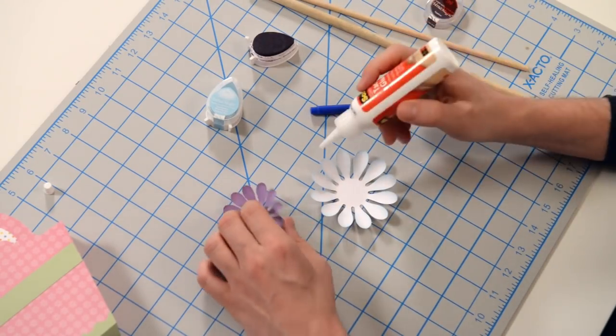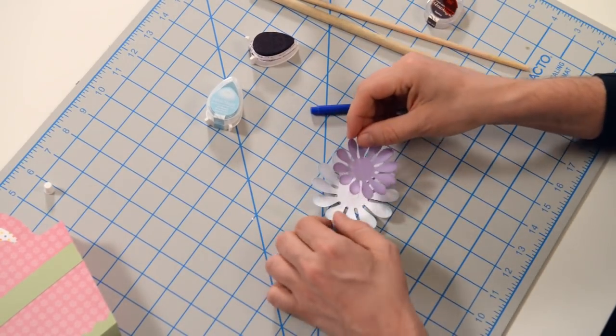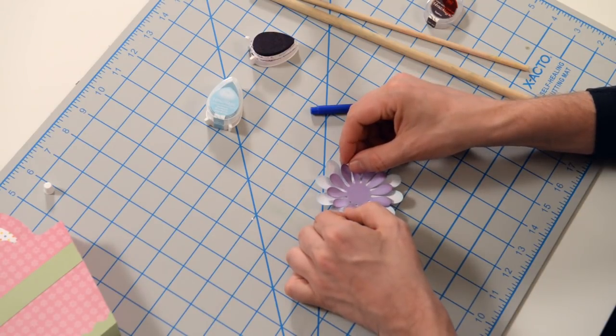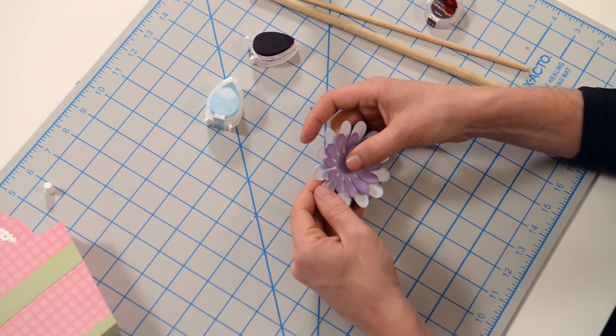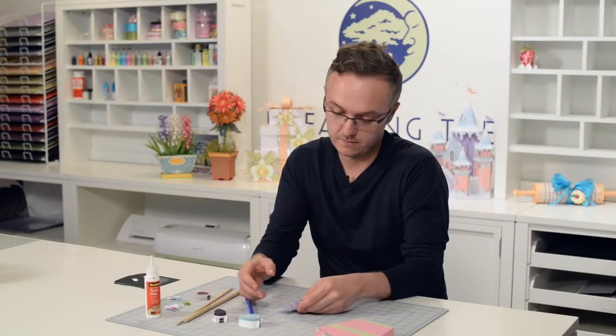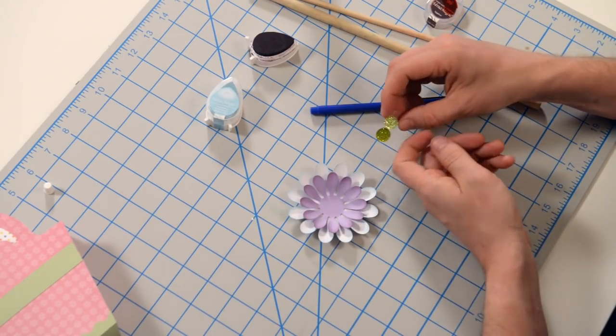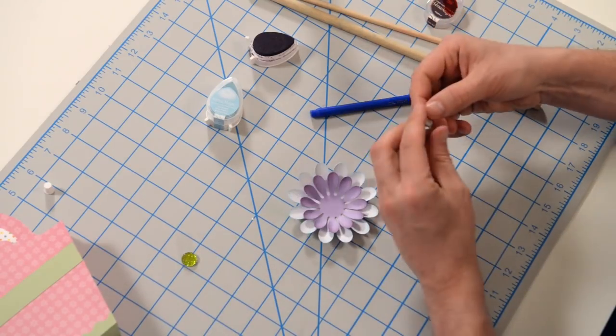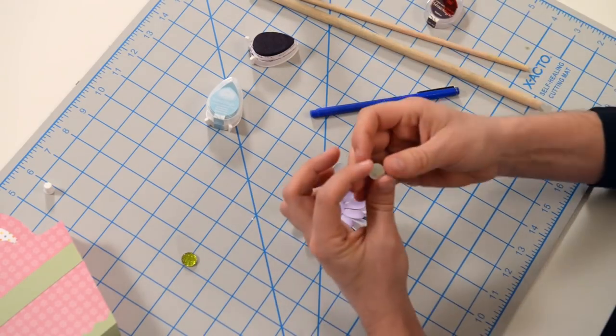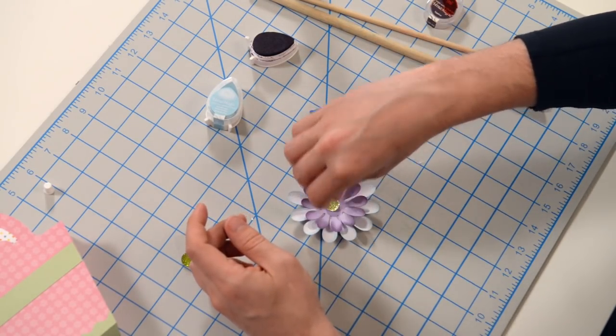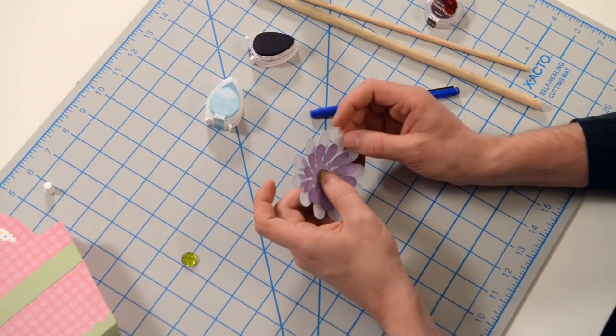So next step is to take our purple piece, just going to put a little bit of glue in the center there. I'm going to place this purple piece inside this white piece right in the center. Make sure that you're offsetting the petals so that they're not overlapping. Try to get it nice and centered. And then I've got this green bling. I'm just going to go with the lighter tone just to play it safe. This is sticky on the back, but sometimes that just falls off. I'll pop that right on there. That's really pretty.